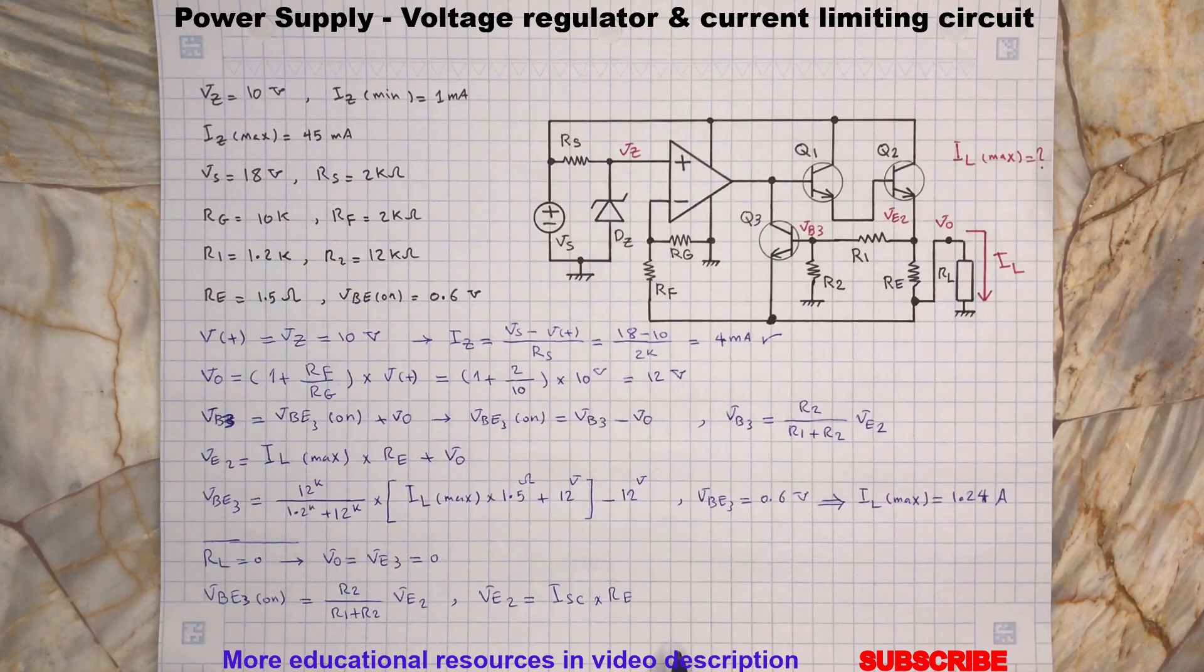So by plugging the known parameters into this equation and solving it for the short circuit current we will get the following.